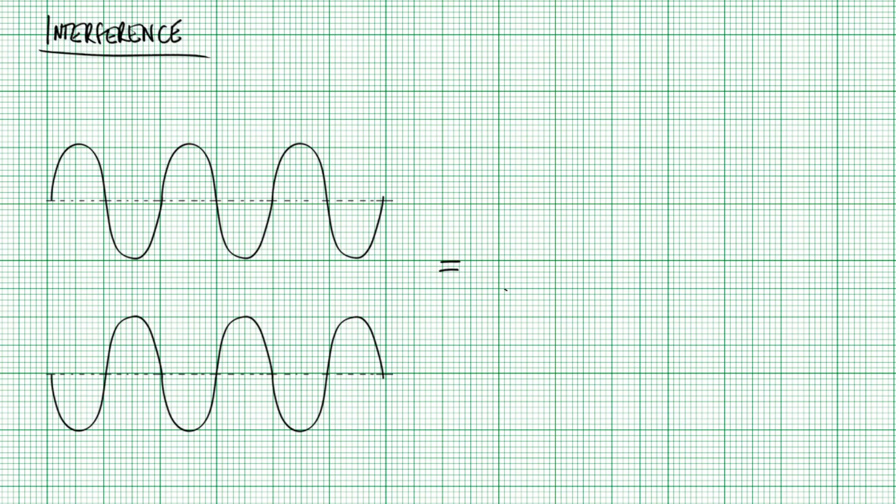Now it's also possible for waves to be out of phase and what that means is the opposite happens when they meet. Instead of crests meeting crests what you end up with is you end up with what you've got here where crests are meeting troughs. This results in waves being out of phase.